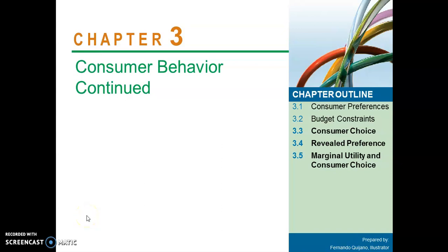Good day, ECO 231 students. We continue with Chapter 3 in Week 3, continuing with Consumer Behavior, particularly Sections 3.3, 3.4, and 3.5. This deals with Consumer Choice, Revealed Preference, and Marginal Utility and Consumer Choice. Last week, Week 2, you dealt with Consumer Preferences and Budget Constraints, so it is important that you have done that work first before we continue.